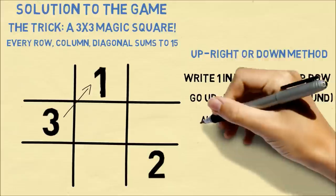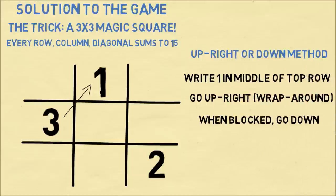We again go up and to the right, but this time we're blocked because this square already has a 1. So when we're blocked, we go down. So that's where we write a 4. And we're going to keep on applying this rule of going up and to the right to write the next number and continue to fill out the square.